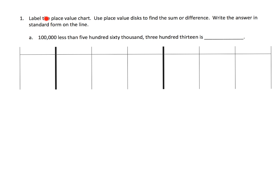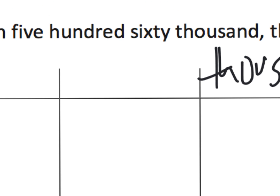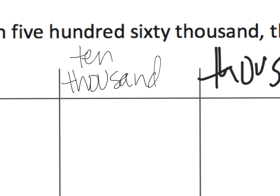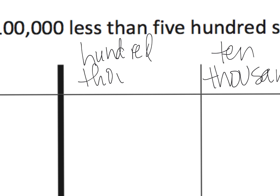It says to label the place value chart, so let's do that first. I'm going to fill this in: thousands, and then — because it's going to get a little cramped, I have to zoom in — ten thousands, and then a hundred thousands.